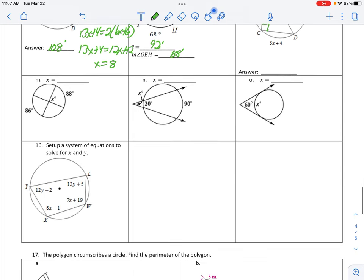Okay. Letter M. Inside the circle. One half of 88 plus 86. 88 plus 86. Take half of that. 87 degrees.